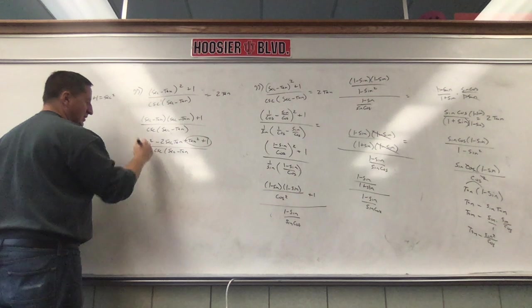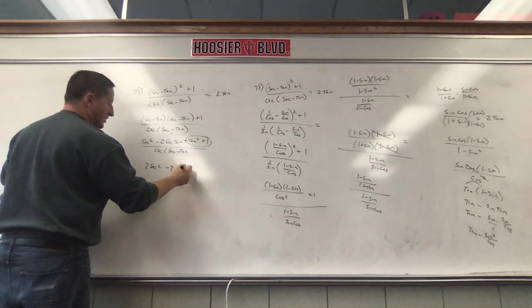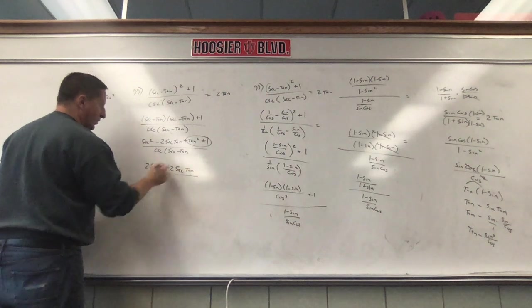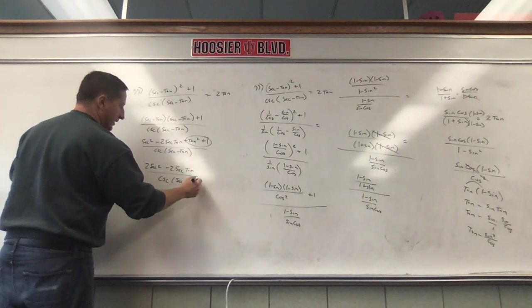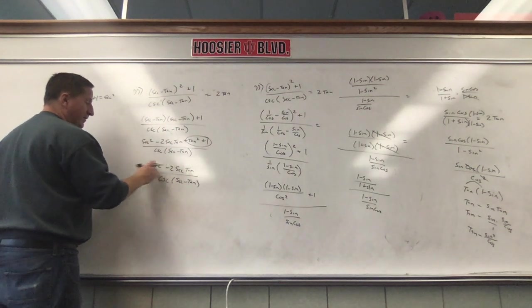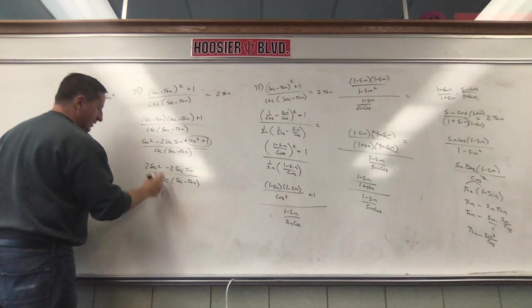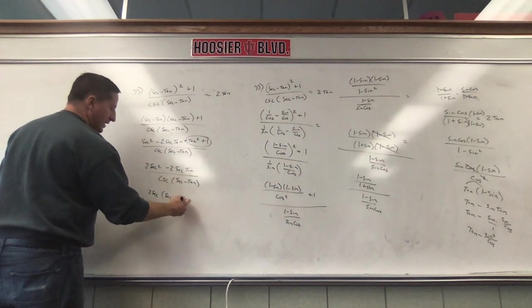Secant squared and another secant squared is two secant squareds minus two secant tangents over cosecant secant minus tangent. That's secant squared plus another secant squared is two secant squareds. I can factor out a two secant, two secant times secant minus, take a two secant out of this left with tangent.